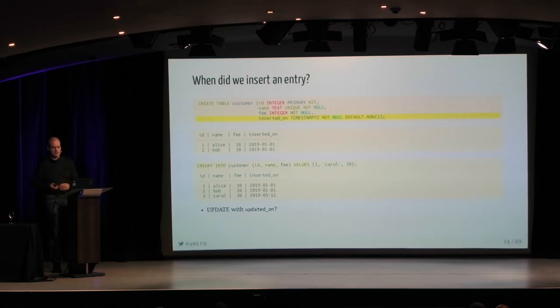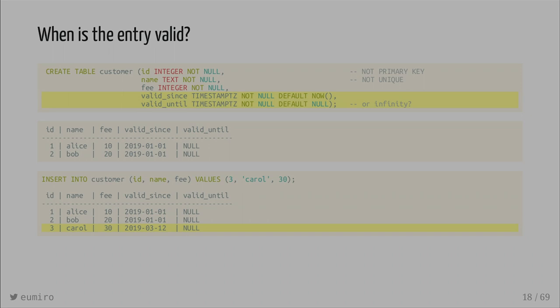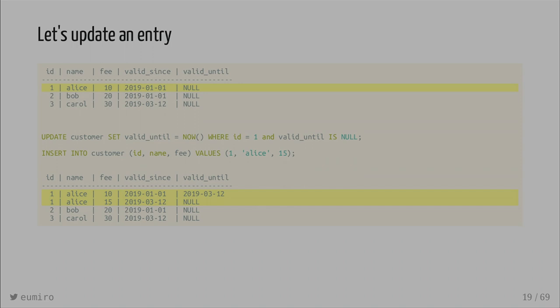But if we want to update the database, we need the information when the data was updated. If we want to delete, what are we going to do? We can say an entry is valid at some point in the history. So we have two columns, 'valid since' and 'valid until', and we see that these two records were valid from the beginning of the year until the future. Then as soon as we enter Carol, we see there is a new record inserted today. If we need to update an entry — for example, update the fee for Alice from 10 to 15 — we update the old entry and say it was valid until today, and from now on there is a new entry with Alice with the fee of 15, valid from now on.